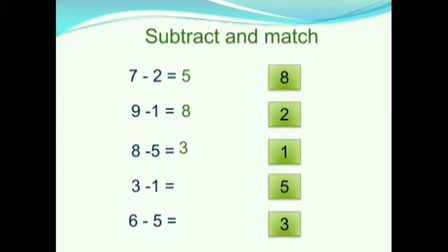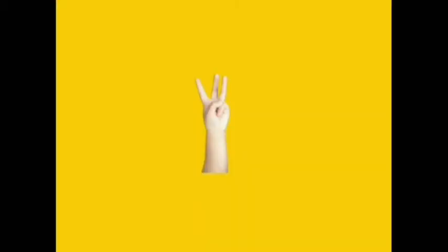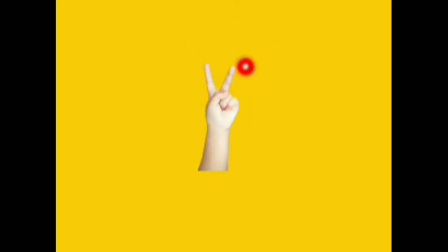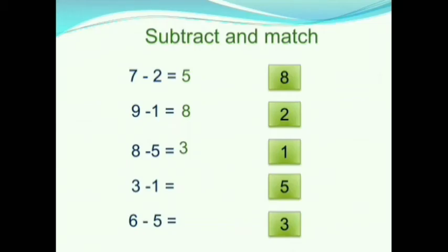In the fourth question, we have 3 minus 1. The first number is 3, so here we have 3 fingers. The second number is 1, so we will fold 1 finger. How many fingers are left? 1, 2. 2 fingers are left. So we will write 2. 3 minus 1 is equals to 2.